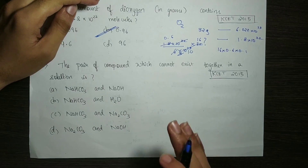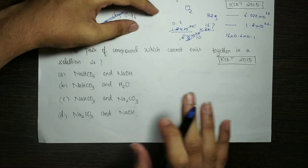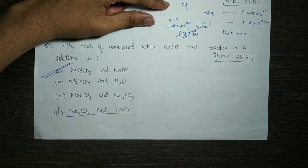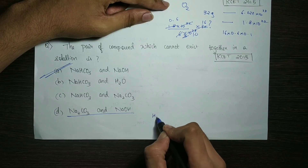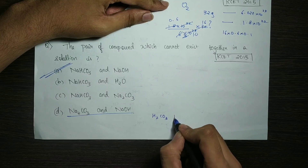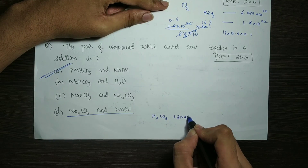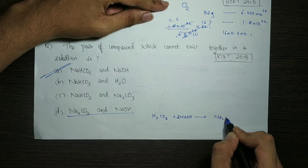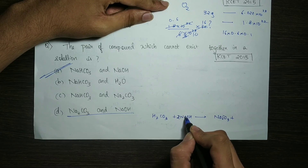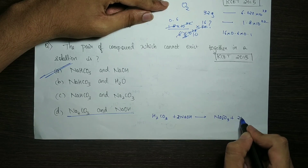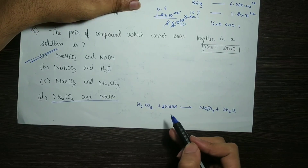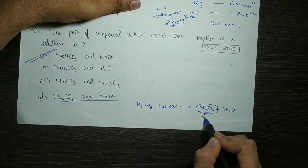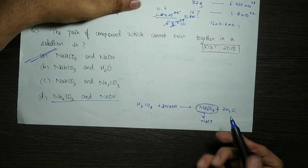The next question: the pair of compounds which cannot exist together in a solution is? H2CO3 is carbonic acid. H2CO3 plus NaOH replaces 2 hydrogens giving Na2CO3 plus 2H2O. This is a completely neutralized salt. With partial replacement we get NaHCO3 — a partially neutralized salt.